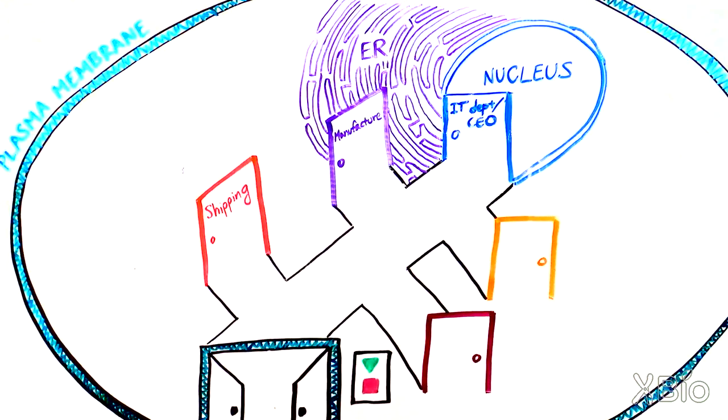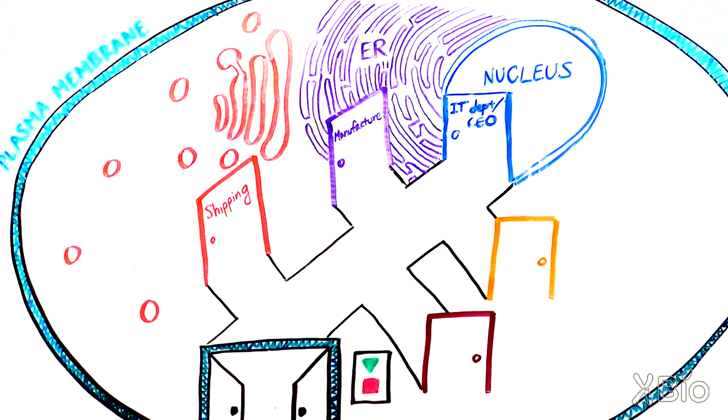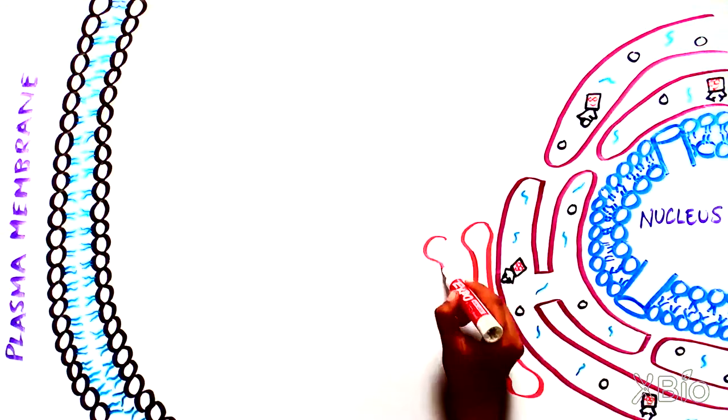Once these materials are made in the ER, they are sorted, packaged, and delivered to the cell's shipping department, the Golgi apparatus.